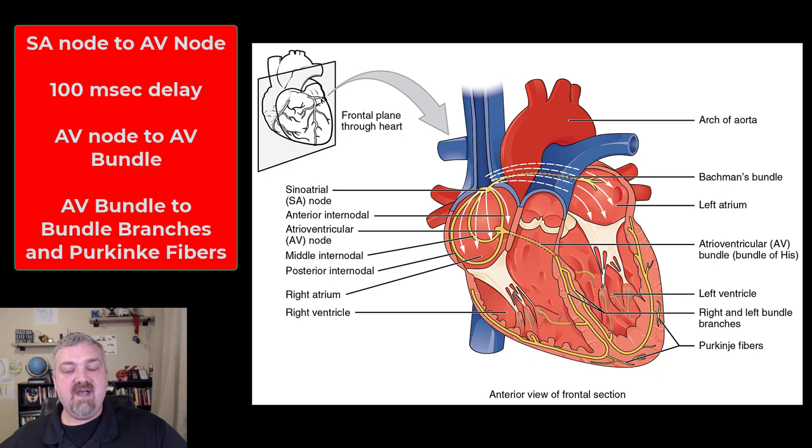Then the AV node is going to fire off that signal to the AV bundle, also known as the bundle of His, and then to your two bundle branches, the left and right bundle branches, then to the Purkinje fibers, which you see there, then that signal is going to turn around and it's going to depolarize the entire ventricle from the bottom up. Then when the ventricles are going to contract, it's going to wring out the heart from the bottom like we already mentioned.